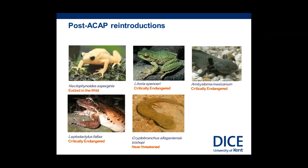Some examples of post-ACAP reintroductions include the mountain chicken frog, Leptodactylus fallax. Its reintroduction program has the goal of testing whether released frogs can manage their own chytrid infection through habitat manipulation, rather than re-establishing a population. So this is an experimental, research-related reintroduction rather than one aimed at establishing a self-sustaining population.